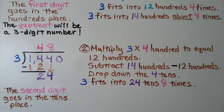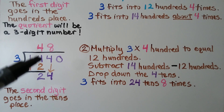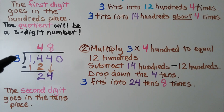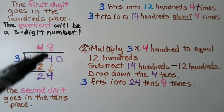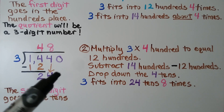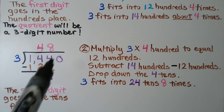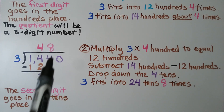We multiply 3 times 400 to get 1,200, then subtract: 1,400 minus 1,200 gives us 2. Now it's the 4's turn to come down. We ask: 3 can fit into 24 how many times? It fits 8 times, so we put an 8 above the tens place. This is really 24 tens, so the second digit goes in the tens place.